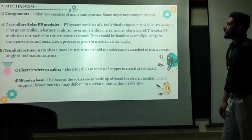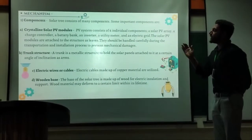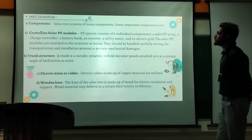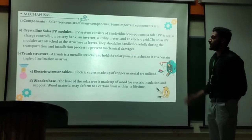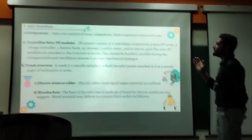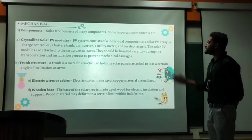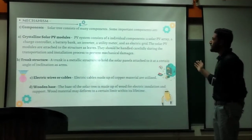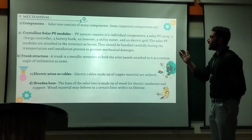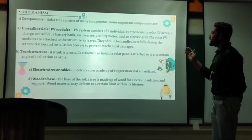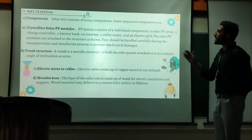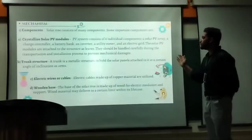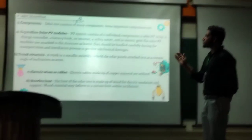Now the next part is mechanism. First, components. A solar tree consists of many components. Some important components are: A) the solar PV module — the PV module consists of 6 individual components: a solar panel array, a charge controller, a battery bank, an inverter, a utility meter, and an electric grid. The solar structure should be handled carefully during transport, rotation, and installation to avoid mechanical damages. B) Trunk structure — the trunk structure is a mechanical structure to hold the solar panels at a certain angle. C) Electric wire or cable — electric cables made of copper materials are used. D) The base — the base of the solar tree is made of material for electric insulation and structural support.